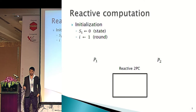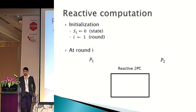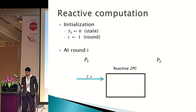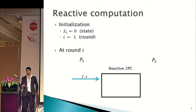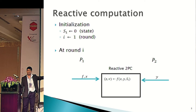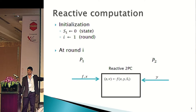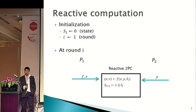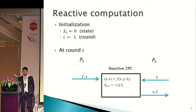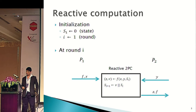What is reactive computation? Initially, we have a state which is just zero. We have a state and a round which starts at round number one. Then at each round i, the first player inputs a function and an input x, the second player puts in an input y, and the functionality outputs a value z and some v which is added to the internal state, computed from f, x, y, and the current state. It then updates the state for the next round and outputs both the output value z and the function — this is reactive 2PC.